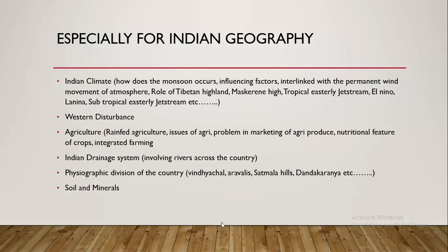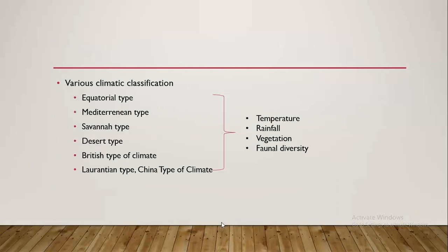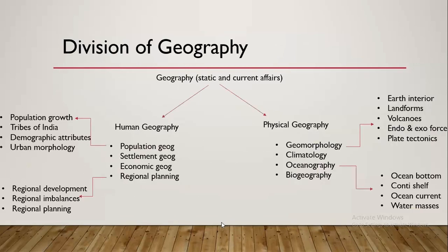Agriculture is an important aspect of geography — it provides food, and everything is related to food. You need to understand how agriculture is getting impacted, what are the issues in marketing agricultural produce, the problem of nutritional security in farmers' families, what is integrated farming, and the positive and negative impact of commercial agriculture. These are interrelated topics, and you need to be well aware of geomorphology, climatology, oceanography, and human geography to answer them.